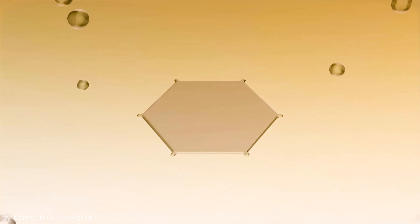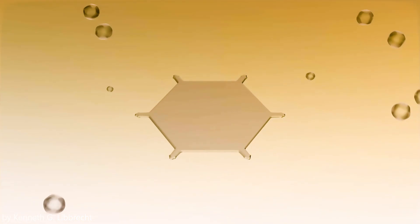As more water vapor freezes onto the initial crystal, additional water molecules align themselves in a hexagonal pattern. The hexagonal symmetry emerges because the water molecules arrange themselves in a way that minimizes the energy of the crystal lattice.